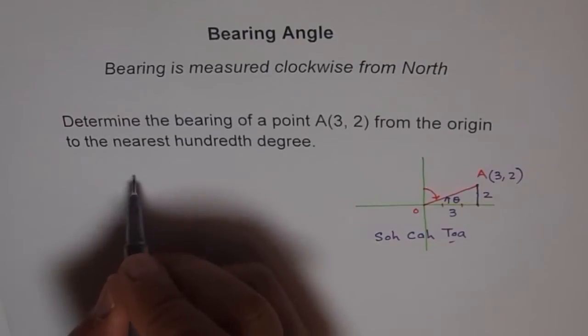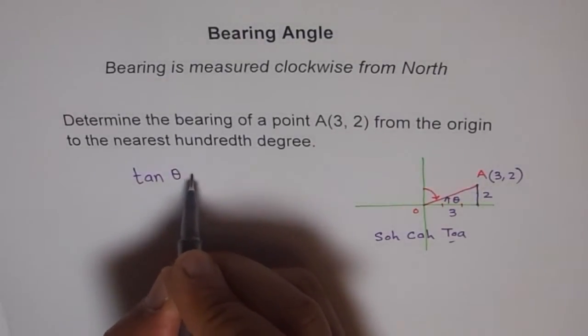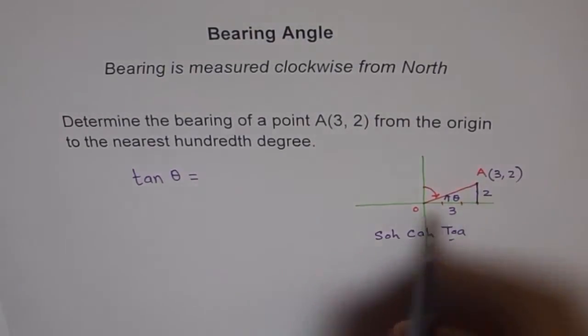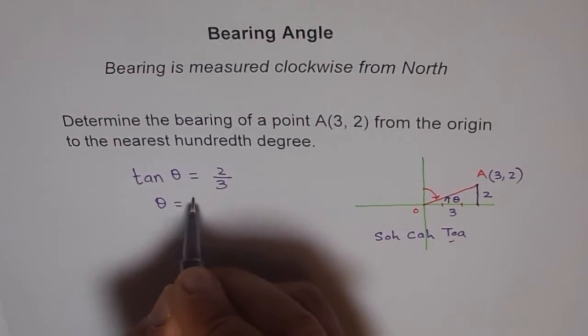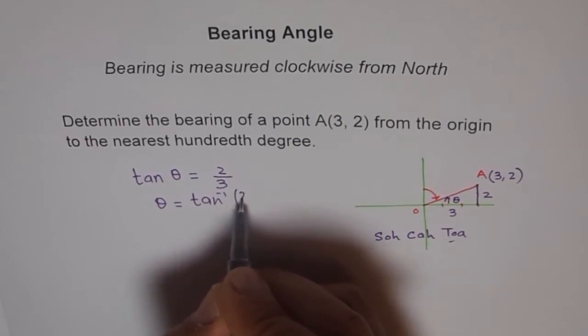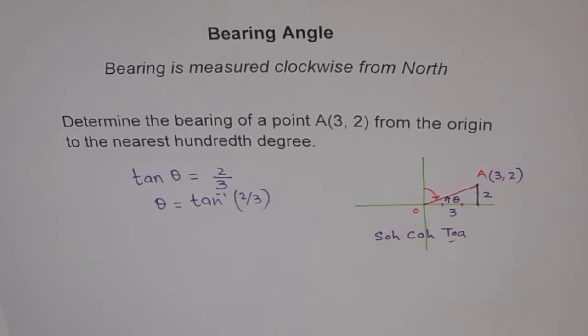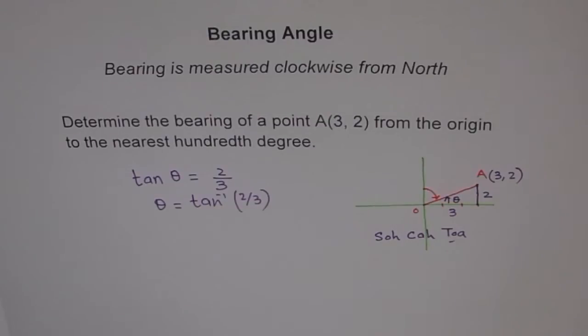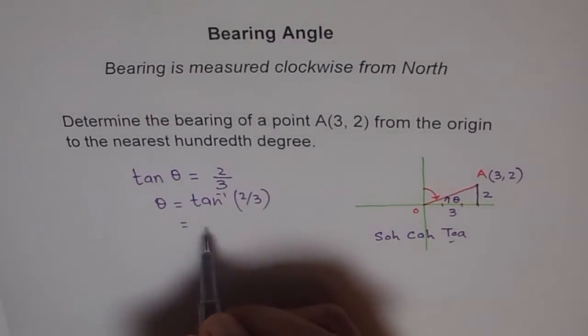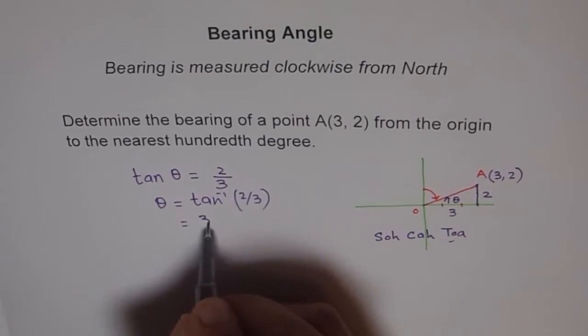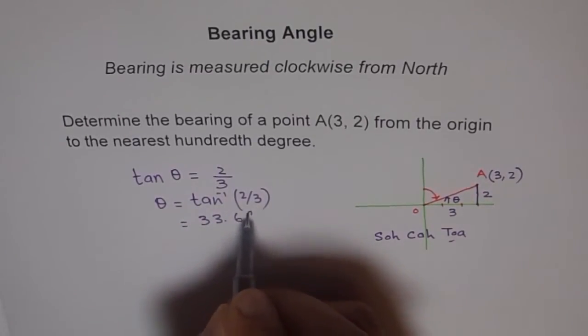So we say tan of theta is equal to 2 over 3. Therefore, theta equals to tan inverse of 2 over 3. So we use our calculator and find inverse. So tan inverse of 2 divided by 3 is equal to 33.6900. So we get theta equals to 33.6900.